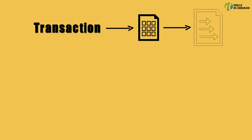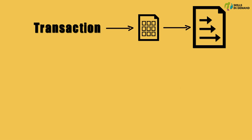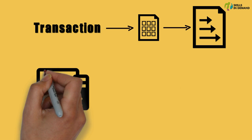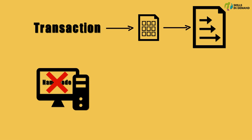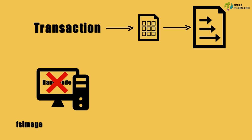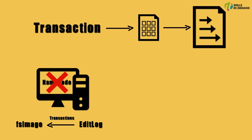At some point of time, this file becomes very large. At this point of time, if the name node fails due to corrupted metadata or any other reason, then it has to retrieve the FS image from the disk and apply all the transactions present within the edit log file.